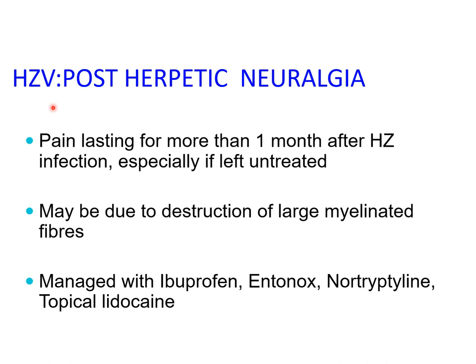The lesions associated with shingles tend to heal within two to three weeks and the pain usually settles. However, if the pain lasts for more than a month following herpes zoster infection, especially if left untreated, we label it as post-herpetic neuralgia — a form of secondary neuralgia in the head and neck region. In contrast, trigeminal neuralgia and glossopharyngeal neuralgias are primary neuralgias. The neuralgia may be due to destruction of large myelinated fibers infected by the herpes zoster virus.